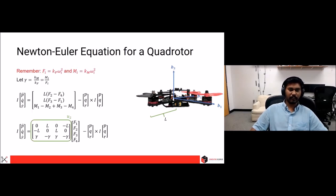Now, let's continue with the Newton-Euler equation for a quadrotor. Remember from the previous slides that F is KF into omega squared, M is KM into omega squared. Let us just define a constant called gamma, which basically gives you a function of the air drag, which is KM divided by KF, which is also the ratio of M divided by F.